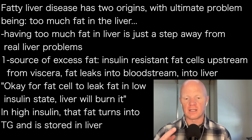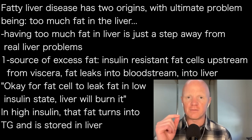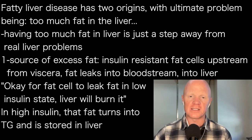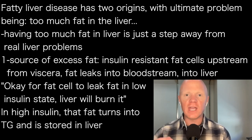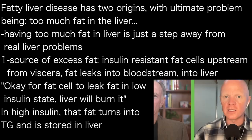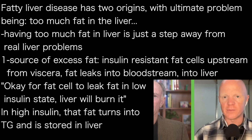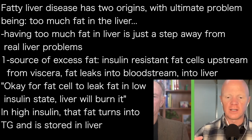In that case, if allulose can improve — by activating AMPK — the insulin sensitivity of the fat cell, then that fat won't be leaking out of the fat cell in a state of high insulin. It's okay for a fat cell to leak fat in a state of low insulin, because then the liver will just burn it. But if the liver is seeing a lot of fat and insulin is elevated, it cannot burn it. Fat oxidation stops — it has to store it, turning it into triglycerides. And now we have fatty liver disease.